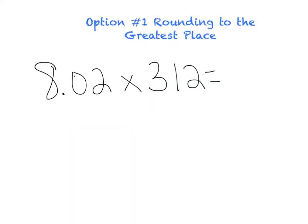All right guys, so option number one to help you with estimating is rounding to the greatest place. This is kind of like traditional rounding. So the first thing I'm going to do is locate the number the farthest left hand side. So in my number 8.02, my number to the farthest left is 8.